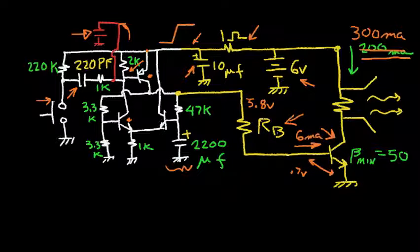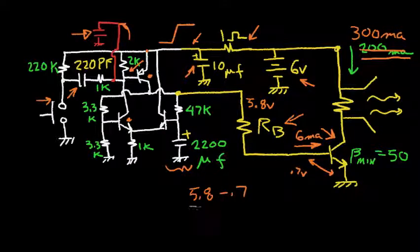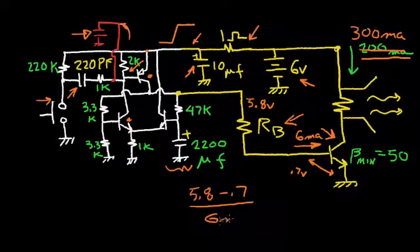So now I can design RB. So when this latch fires, the voltage across RB is 5.8 minus 0.7. And the current that I want in RB is 6 milliamps.